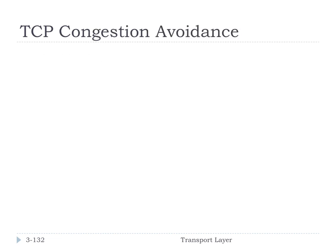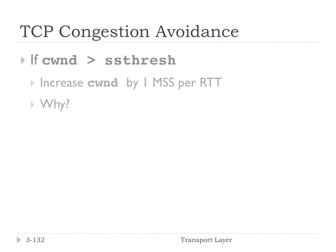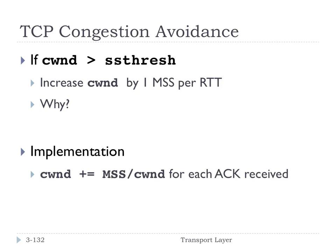In congestion avoidance mode — the normal operation of TCP — the congestion window is greater than the slow start threshold. In this case, the congestion window increases by one maximum segment size per round trip time. This is much slower than slow start because congestion avoidance is more conservative in probing for bandwidth, trying to avoid excessively congesting the network. This is implemented as CWND increasing by MSS divided by CWND for every acknowledgment received.